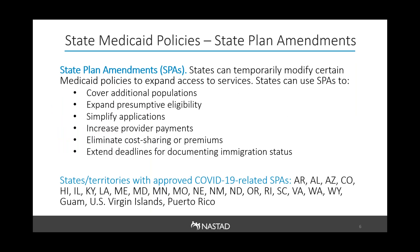State Plan Amendments, or SPAs, are one way for states to make modifications to their Medicaid program. States may need to submit an SPA or waiver to make certain changes. Some examples of changes states can make with an SPA include expanding coverage to more people, easing application processes and documentation requirements, eliminating enrollee costs like cost sharing and premiums, and increasing provider payments during the emergency. To date, 23 states and territories in total have received approval for COVID-19-related SPAs for Medicaid.